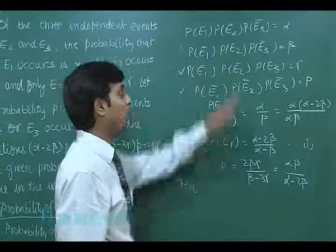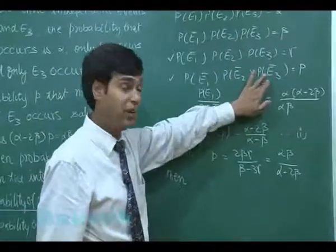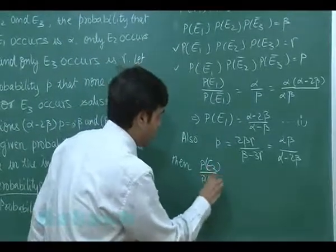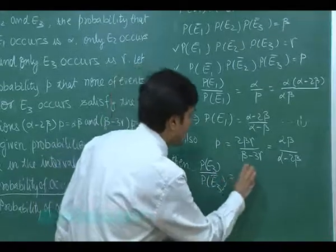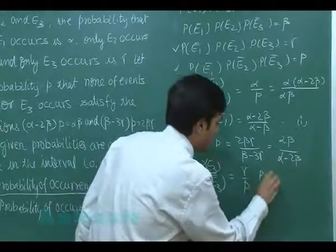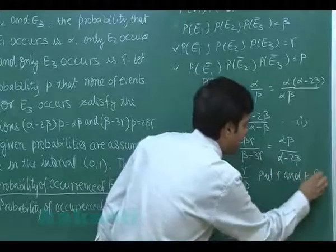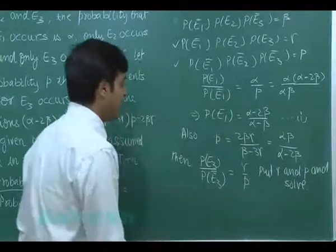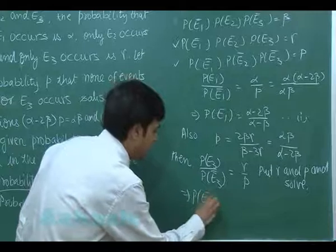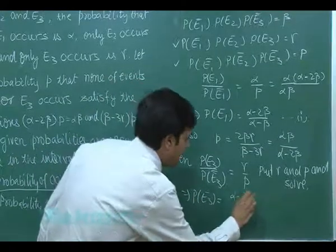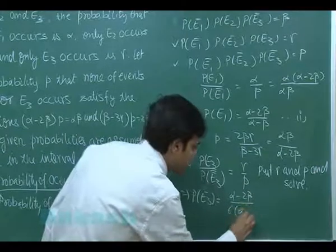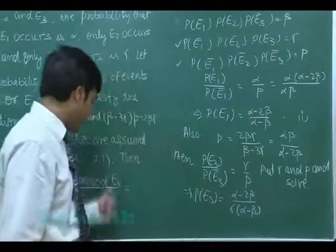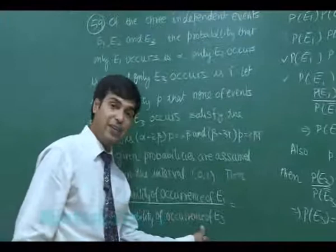Dividing equations three and four to get the relation P(E3) / P(E3_bar) = gamma / p. Substituting gamma and p and solving, P(E3) comes out as (alpha minus 2*beta) / (6*(alpha minus beta)).